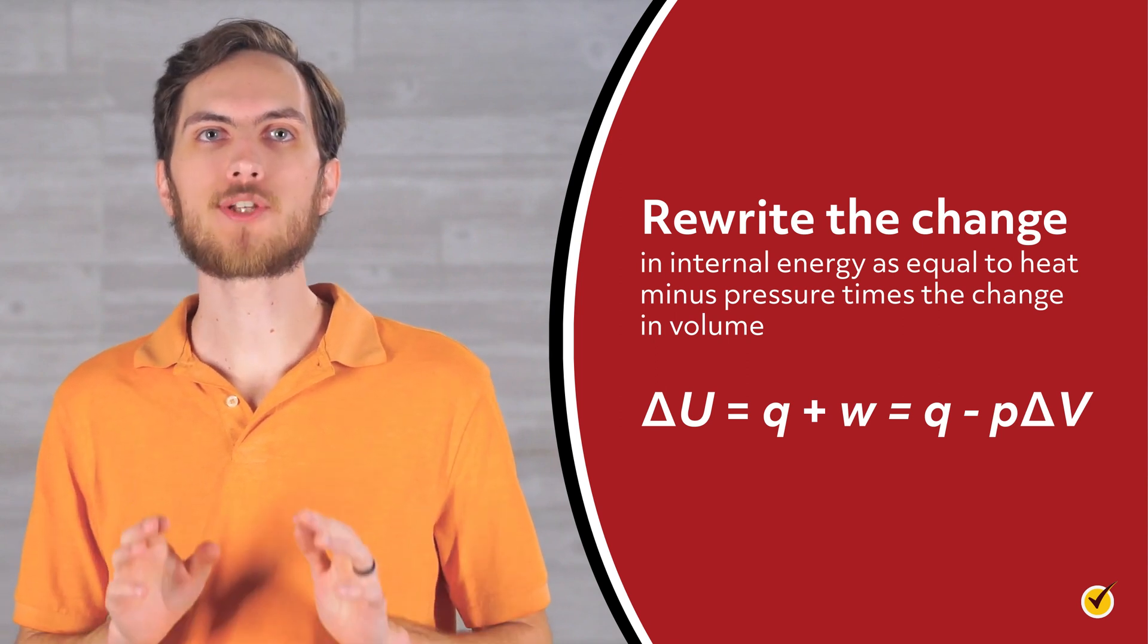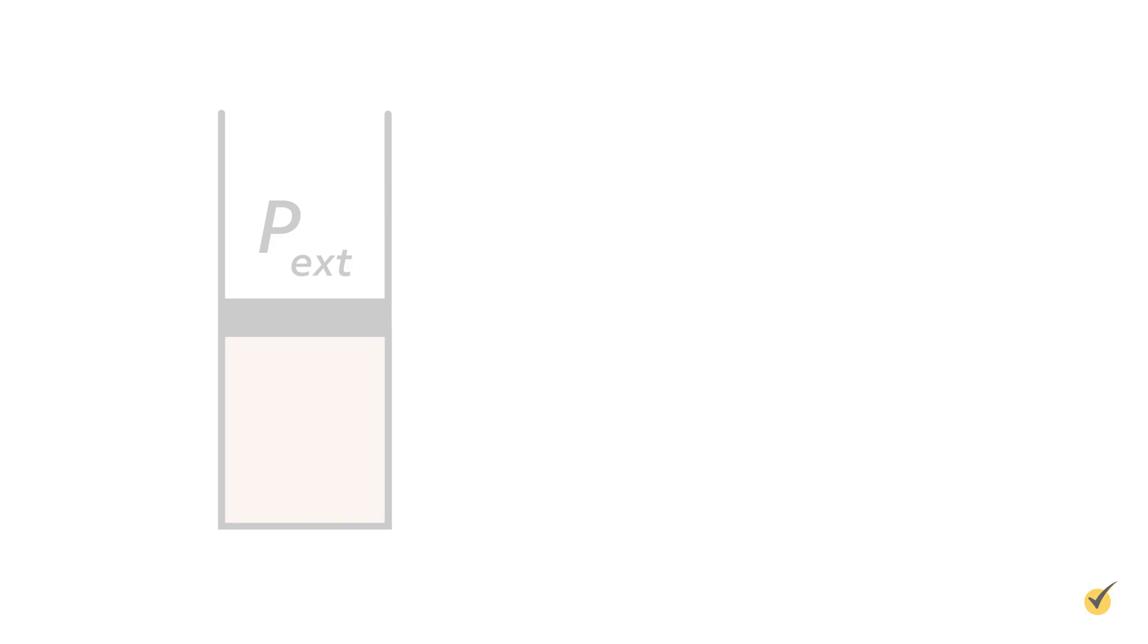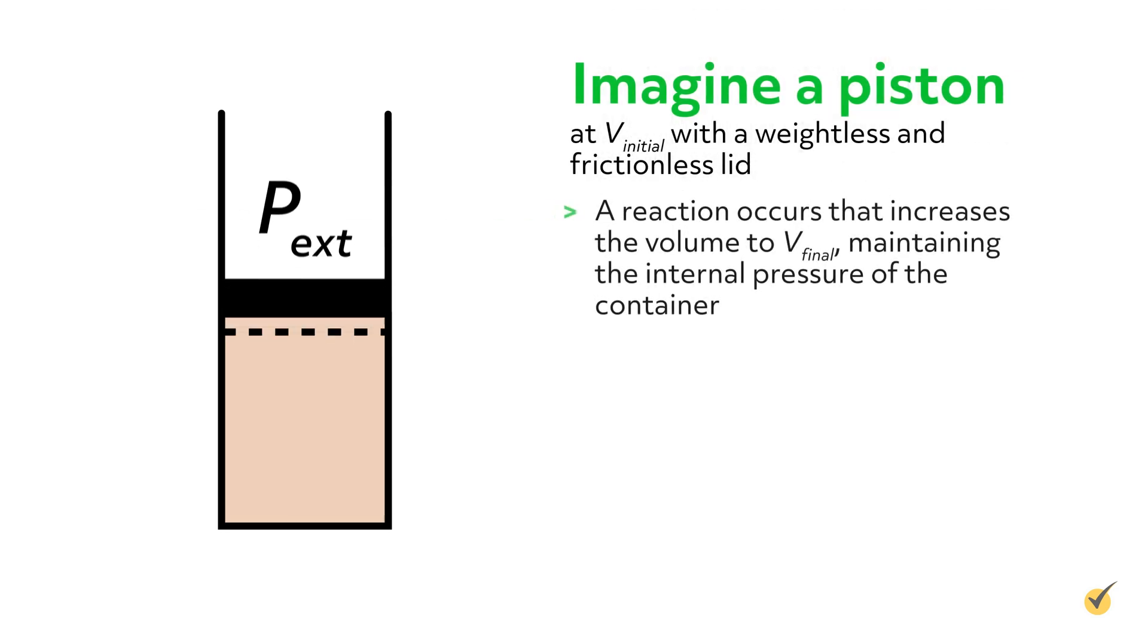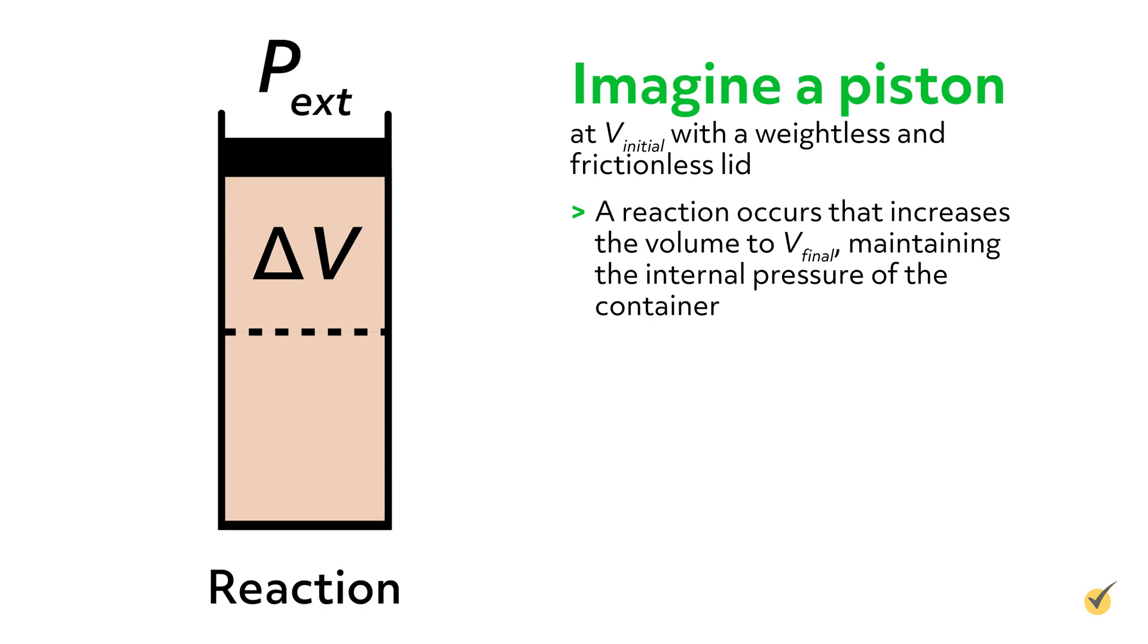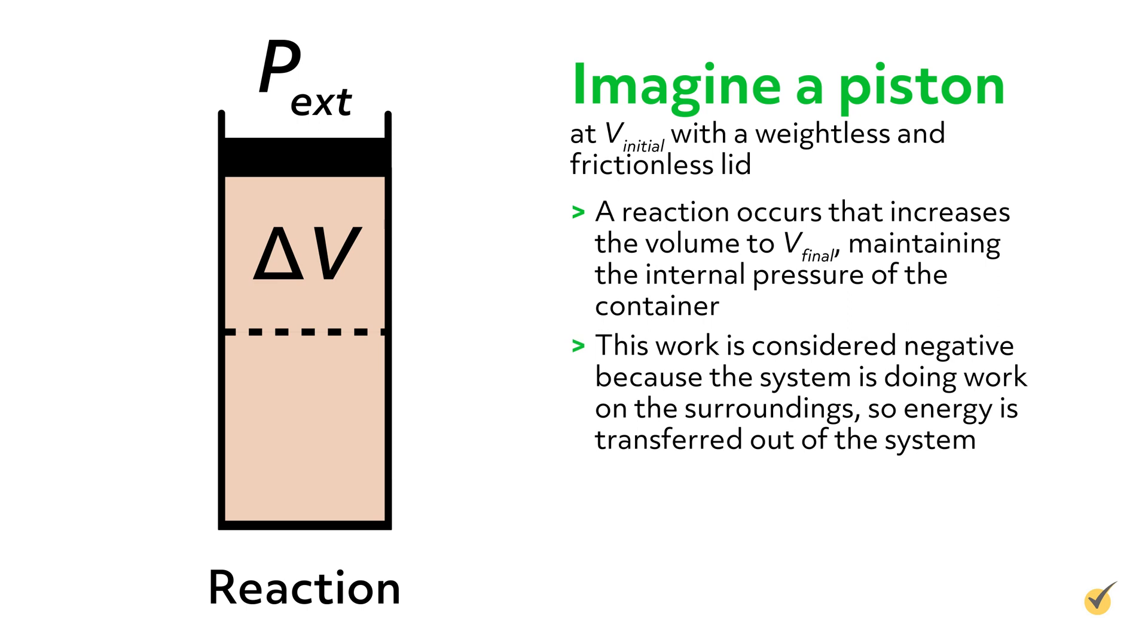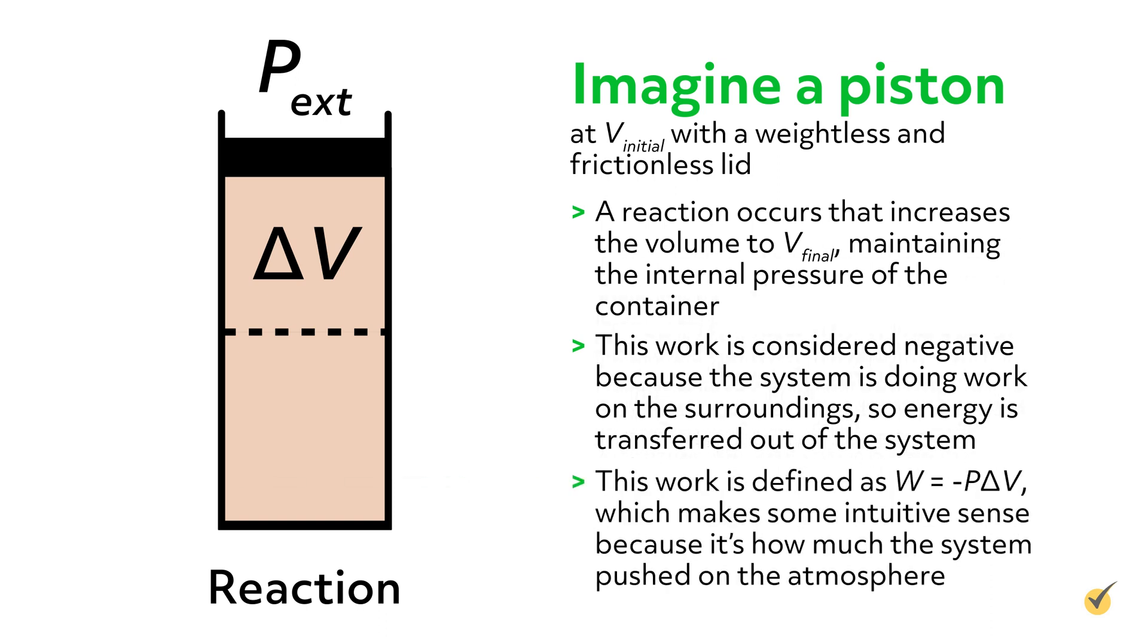Very briefly, here's how to think about PV work. Imagine a piston at the initial volume with a weightless and frictionless lid. A reaction occurs that increases the volume to the final volume, maintaining the internal pressure of the container. This work is considered negative because the system is doing work on the surroundings, so energy is transferred out of the system. This work is defined as the external pressure times the change in volume, which makes some intuitive sense because it's how much the system pushed on the atmosphere.